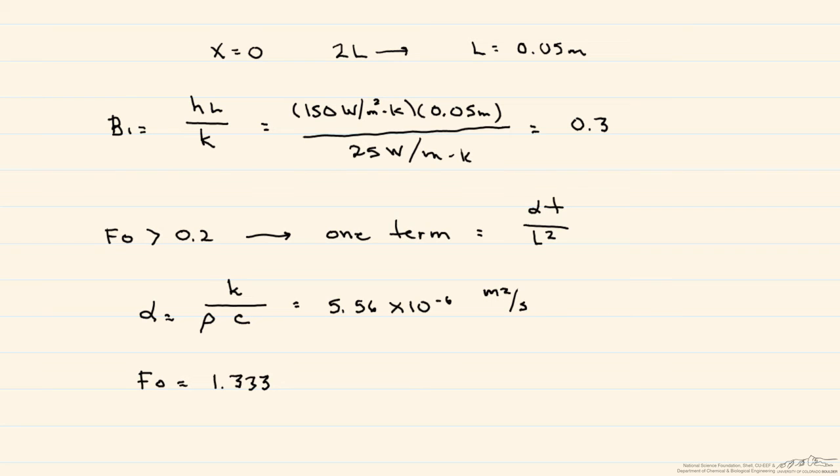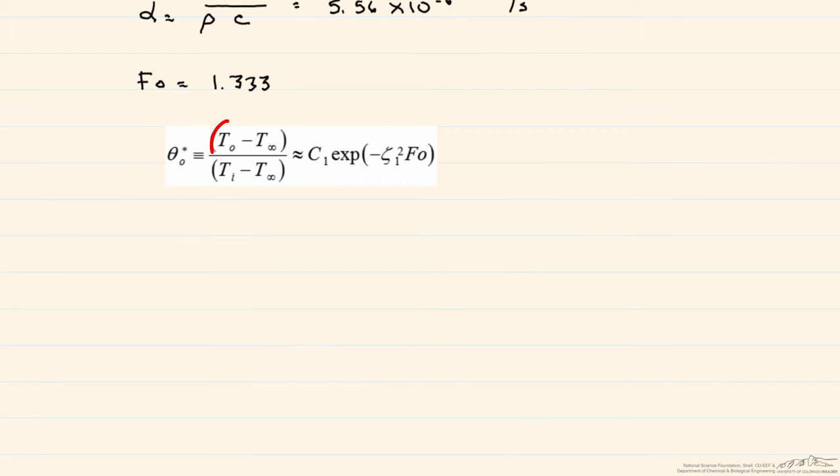So this is clearly greater than 0.2, and we can use the one-term approximation. In addition, since we're looking for the mid-plane temperature, in other words, where x equals 0 or x star equals 0, then the equation simplifies to the following. So we're looking for that T0, so we're going to need to find both this constant and this eigenvalue. And so where do we find it? We use a table that has the C1 and the eigenvalue as a function of Biot. So we look at this table and find what corresponds to our Biot number equaling 0.3.